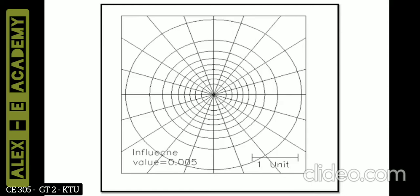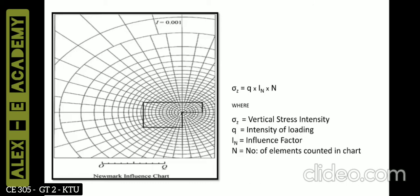We discussed point load, line load, strip loading, circular loading, and rectangular loading conditions, but if a shape comes that doesn't fit any of those categories, we can use Newmark's chart. In the next slide, a figure is shown demonstrating the procedure. The shape drawn may be of any form. The equation used is: σ_z = q × I_n × N, where σ_z is vertical stress intensity, q is intensity of loading, I_n is the influence factor, and N is the number of elements counted in the chart.